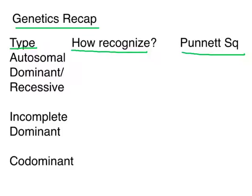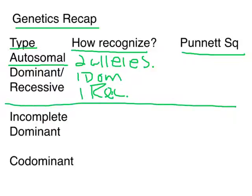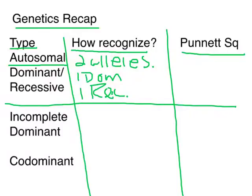The first type is autosomal — remember autosomal means not sex-linked — dominant and recessive. When you have an autosomal dominant and recessive trait, there are only two alleles: tall and short, purple and white. You only have one dominant and one recessive. Your Punnett Square is the basic one you learned in middle school — a two by two — nothing unusual.